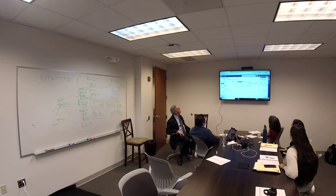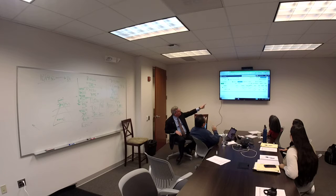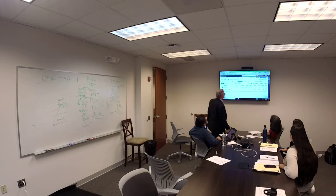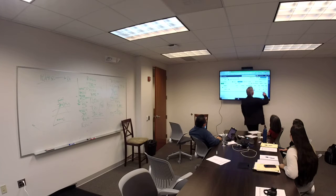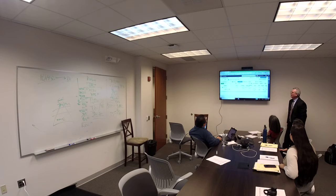By the way — 9,000 impressions, 6,000, 10%, right? In this case it's 1% because it's the reach. So what is the difference between an impression and the reach of a result?